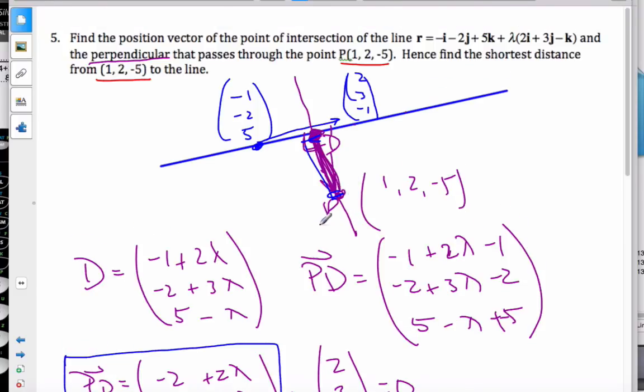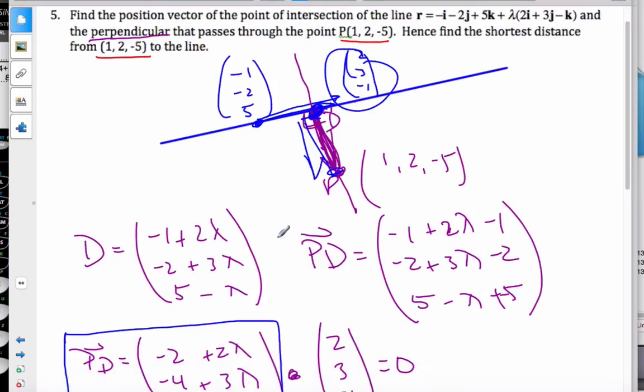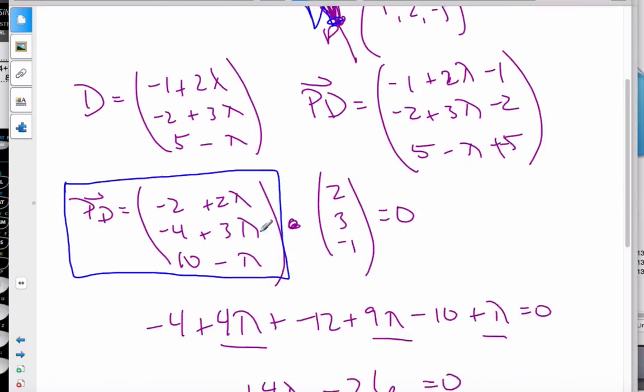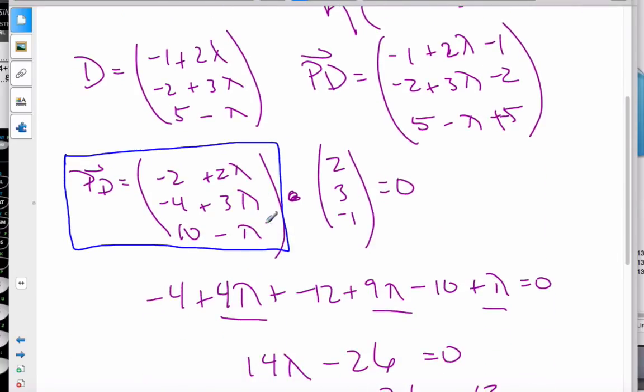So just summarizing this problem, I find this general point D, which is the equation of the line. This is the general point for any point on the line. And then I find vector PD by subtracting the two, and then I dot product with the direction vector, which then will find me lambda for when they are perpendicular, and then I can find the magnitude for the shortest distance.